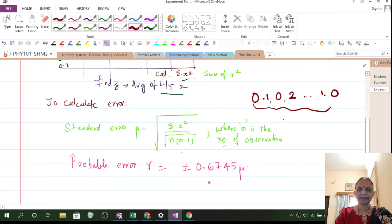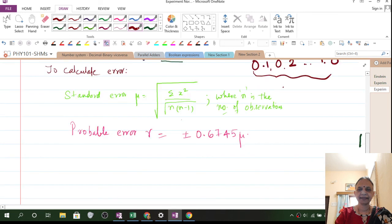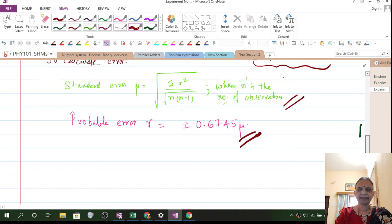Substitute these values and calculate this error. Now probable error is this. That means, the error probability, probably you will get this much error.